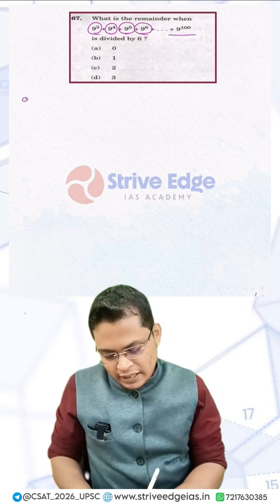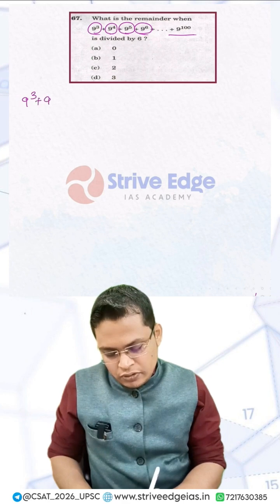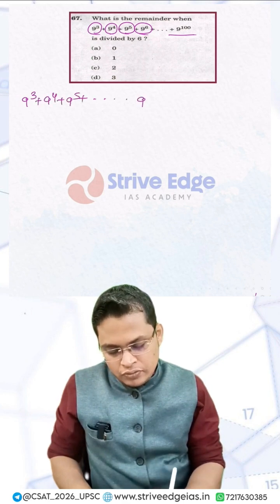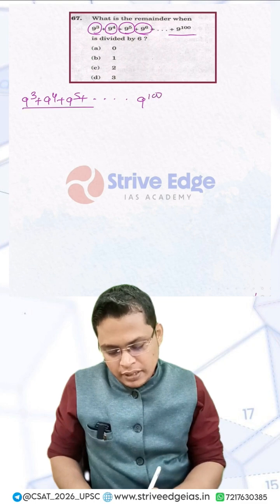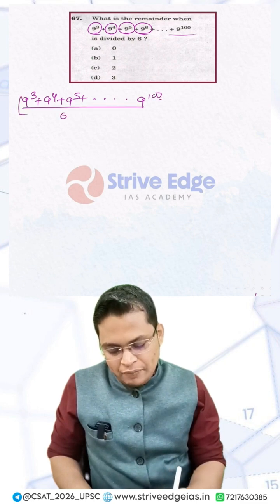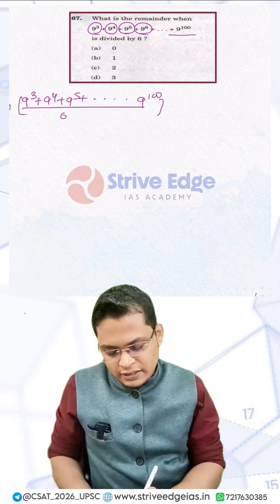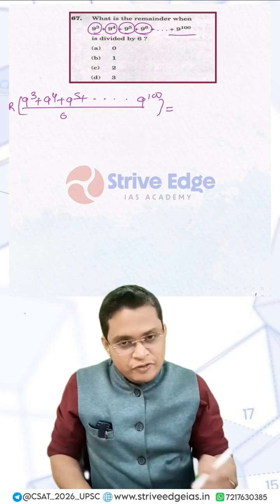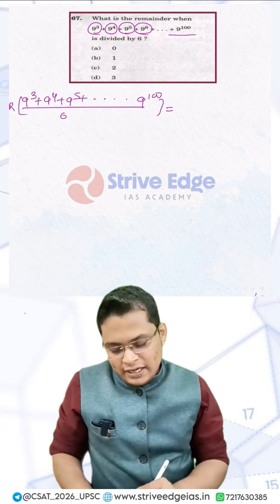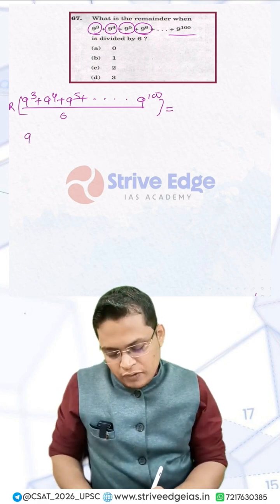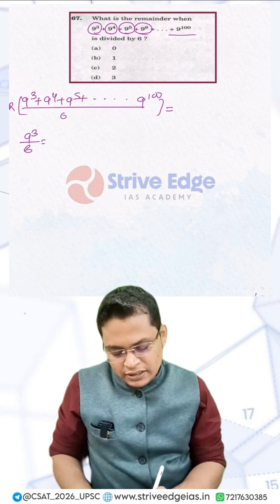So we can write 9³ + 9⁴ + 9⁵ up to 9¹⁰⁰ all divided by 6. We need to find this remainder. Before solving, I need to find what remainder each term gives when divided by 6, starting with 9³ divided by 6.